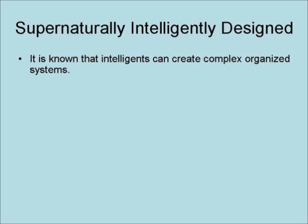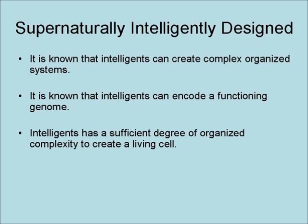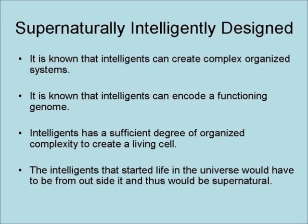Now, it is known that intelligence can create complex, organized systems — after all, humans do so. It is also known that intelligence can encode a functioning genome; human scientists have done this. Intelligence has a sufficient degree of organized complexity to create a living cell. The intelligence that started life in the universe would have to be from outside of it, and thus would be, by definition, supernatural.